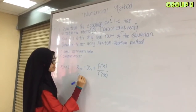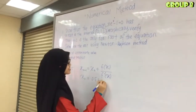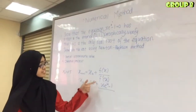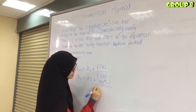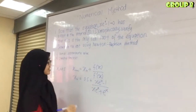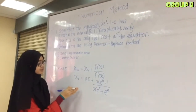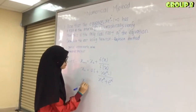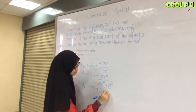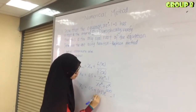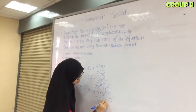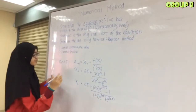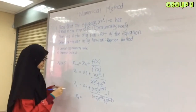So x₂ equals 0.5 minus [x·e^x minus 1] over f'(x). Before substituting, we must differentiate f(x). The differentiation gives f'(x) = x·e^x + e^x. Now substituting x₀ = 0.5: x₂ = 0.5 minus [0.5·e^0.5 minus 1] over [0.5·e^0.5 + e^0.5]. We use the calculator to find the answer.